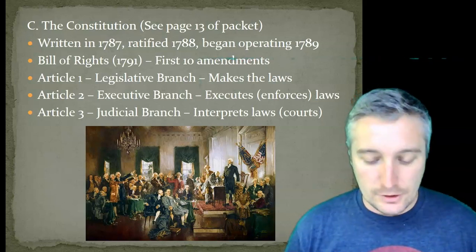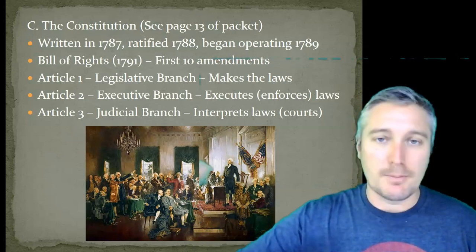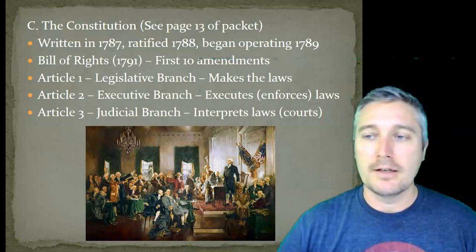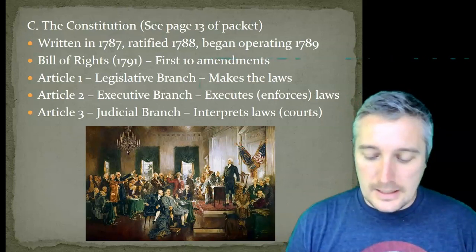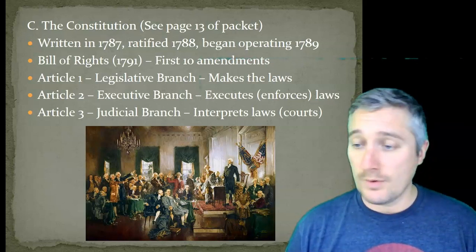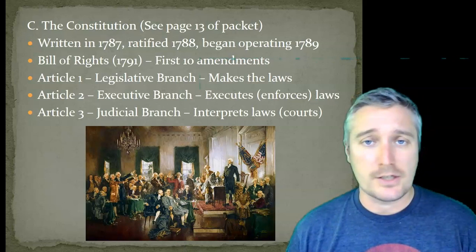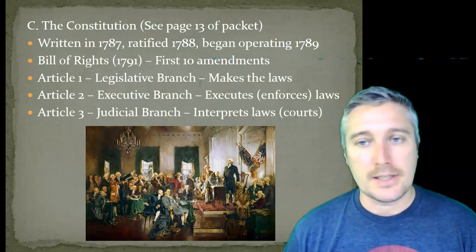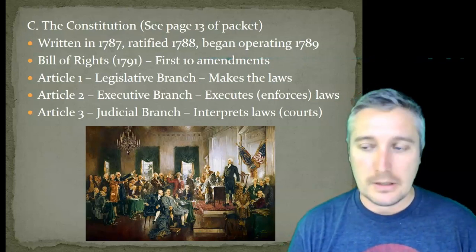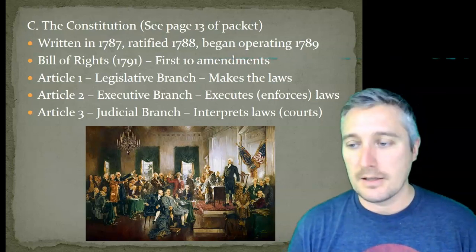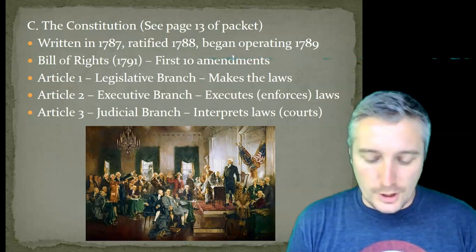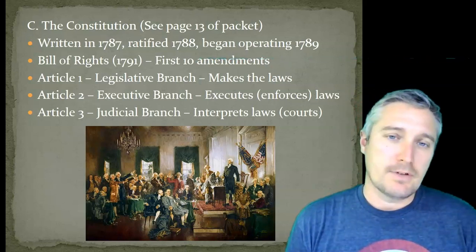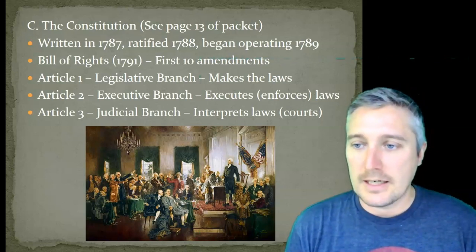There are also things in Article 2 like succession — who would take over after the president if the president died — and the outline for impeachment. We've just gone through an impeachment trial with President Trump, in which the House did vote to impeach him. The Senate did not, so he kept his job, but officially he was impeached. The oath of office is also outlined in Article 2, along with specific executive powers.